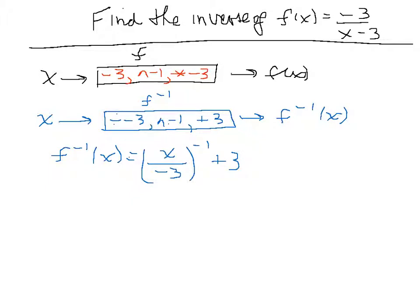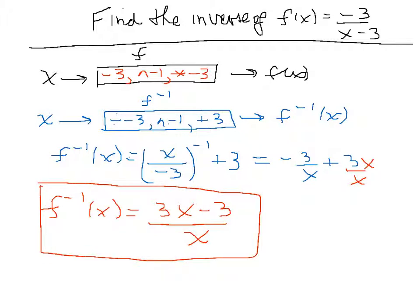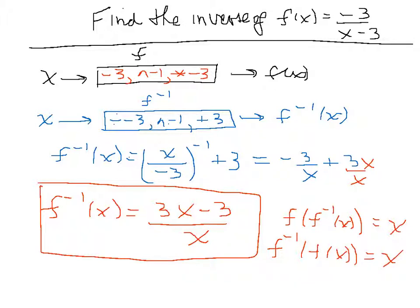Something raised to the minus one is 1 over that, so the expression becomes minus 3 over x, plus 3. Getting a common denominator of x gives us f inverse of x equals 3x minus 3, all over x. I ask you to verify that f of f inverse of x equals x and that f inverse of f of x equals x.